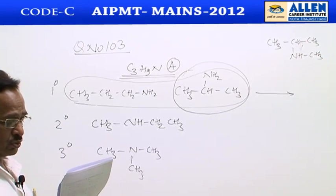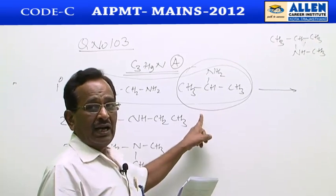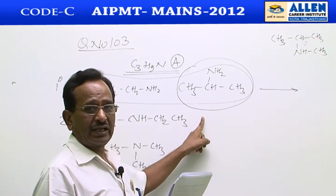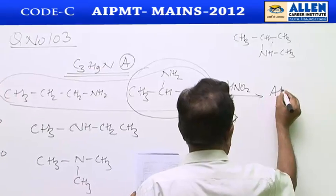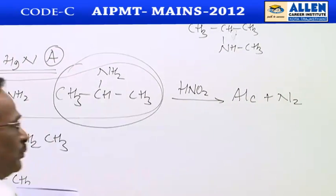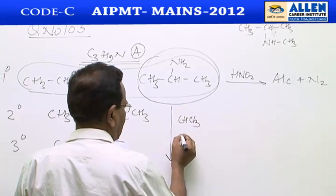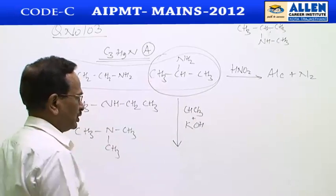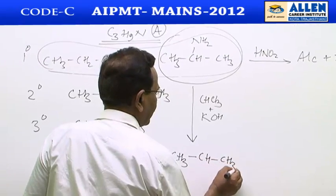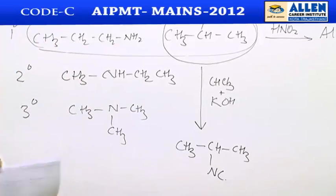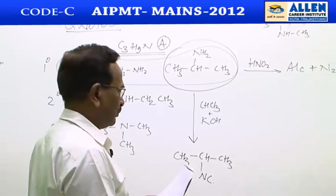Next step: the question shows that compound A reacts with caustic potash and chloroform. This is the carbylamine test for primary amines. The reaction with chloroform and caustic potash produces an isocyanide, which is an offensive smell compound. Hence it is also called the isocyanide test or carbylamine reaction.